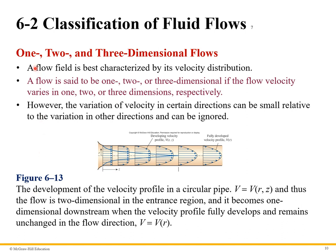You can also have one-dimensional, two-dimensional, or three-dimensional flows. These flows are best characterized by a velocity distribution. Here shows a flow in a pipe, and you can see that the flow is different depending on where you're at inside the pipe.